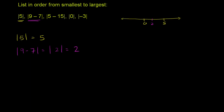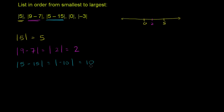Then we have the absolute value of 5 minus 15. That's going to be the same thing as the absolute value of negative 10, since 5 minus 15 is negative 10. There are two ways to think about it: if it's a negative number inside the absolute value sign, it just becomes the positive version, so it becomes 10. Another way: negative 10 would be plotted out here on the number line — it is 10 to the left of 0. That's what the absolute value is telling us.